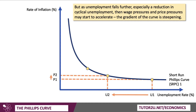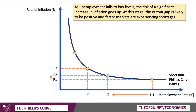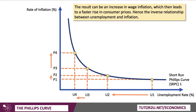As unemployment falls further — the yellow dot shows us that — we see a reduction in cyclical unemployment, and wage pressures and price pressures in the economy may start to accelerate. Notice that the gradient of the Phillips Curve is starting to steepen, and the trade-off between keeping inflation low and unemployment low is starting to become more difficult. Unemployment falls to U3, but price inflation rises to P3. As unemployment falls to low levels below U3, the risk of a significant increase in inflation goes up. At this stage, the output gap is likely to be positive, and factor markets — including raw materials, component parts, and labour — are experiencing shortages.